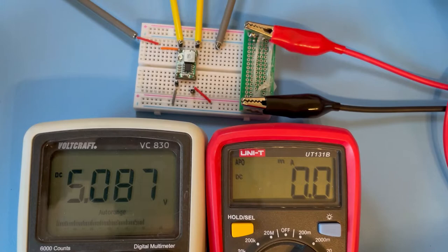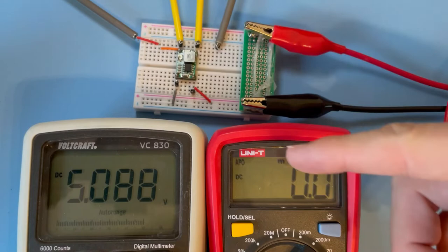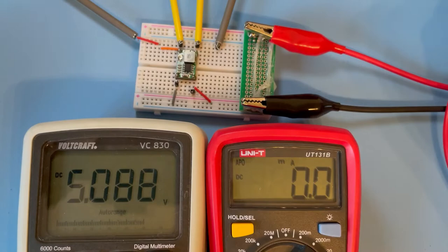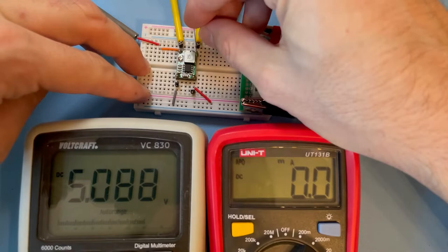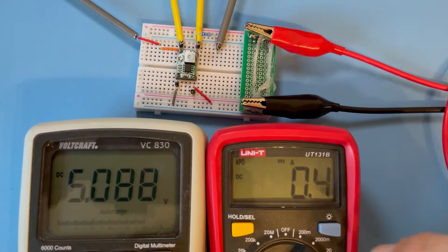I've changed the setup a little bit so that now I can read the milliamperes we output on the output side with this right multimeter, and on the left multimeter we see the voltage. The first thing I'll do is add a 10k resistor at the output. With five volts that should give us roughly about half a milliampere.